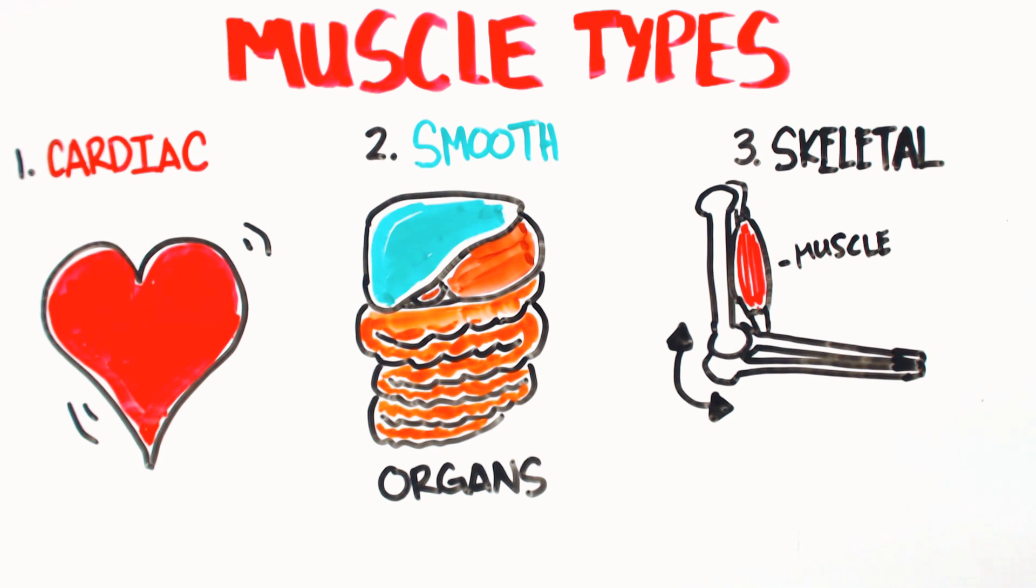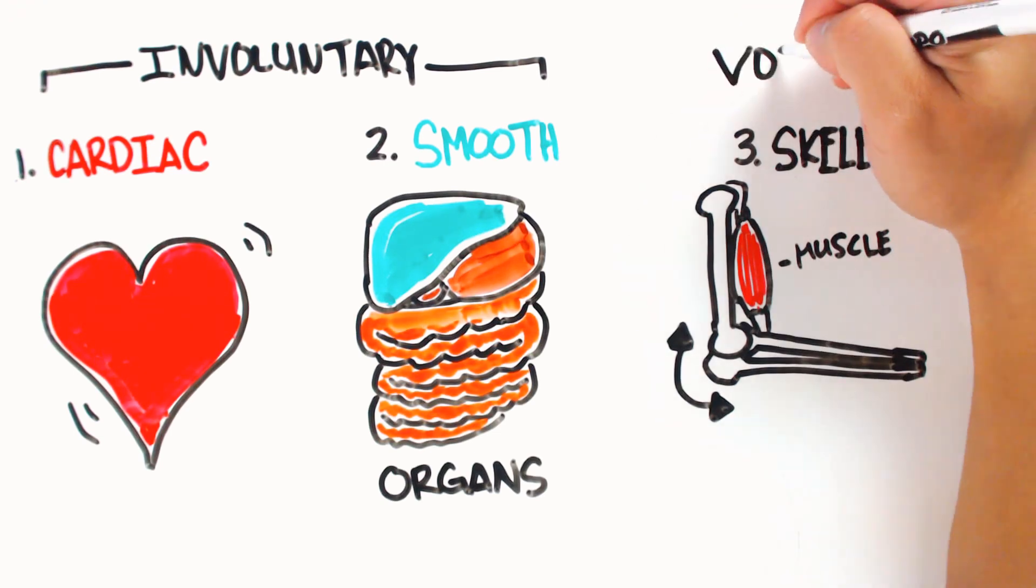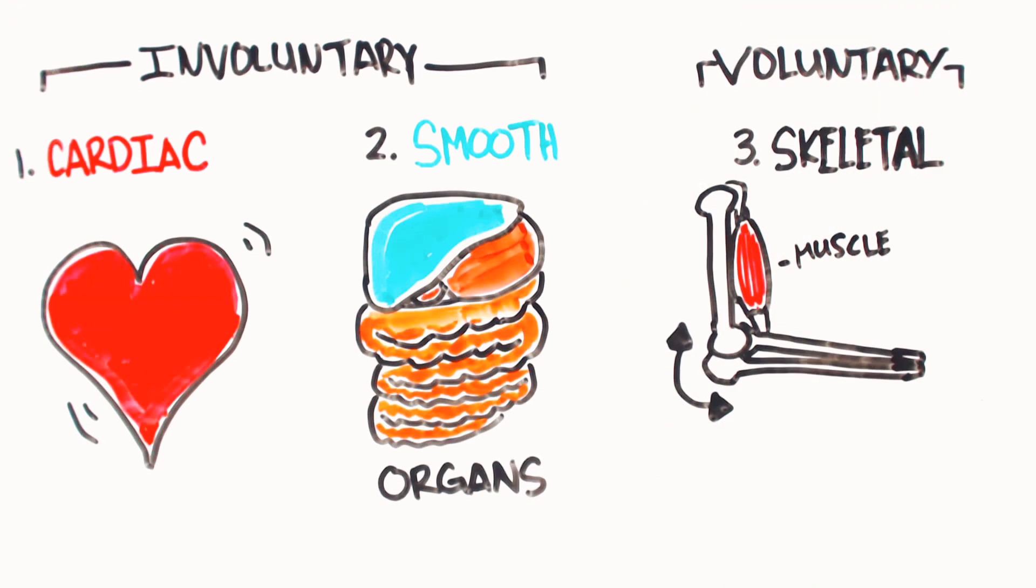Both smooth and cardiac muscles function involuntarily, meaning they operate by themselves. Skeletal muscles, on the other hand, function voluntarily and are under our conscious control.